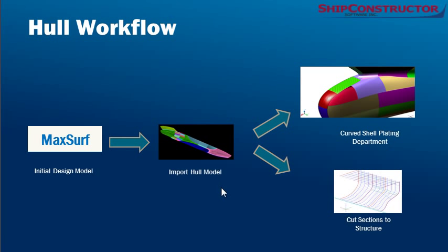Typical workflows in ShipConstructor for the hull geometry: the model is typically started in MaxSurf or other systems like Rhino or other naval architecture modelers and imported into the ShipConstructor hull model. From there, production information about curved parts including shell plates and stringers can be developed. It's also possible to section through the hull model as a starting point for internal structure.